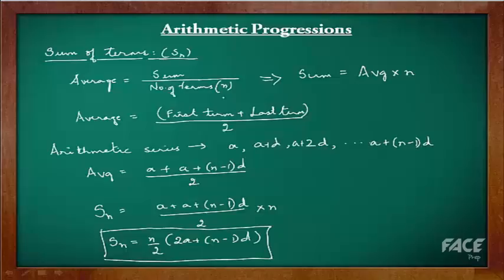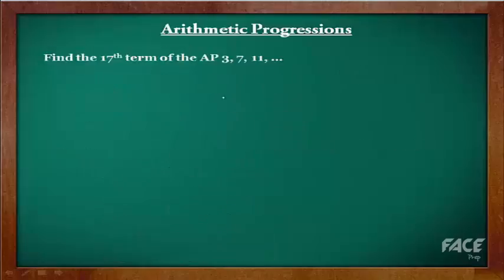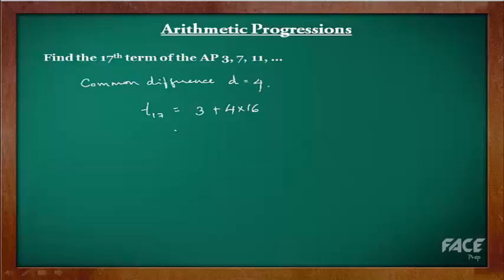These formulae may not be easy to use for difficult questions. A much better way of approaching arithmetic progressions is by using thought algorithms to solve questions in a logical manner. For example: find the 17th term of the AP 3, 7, 11, and so on. To find the 17th term, we add the common difference to the first term 16 times. The common difference is 7 minus 3, which is 4. So the answer is 3 plus 16 times 4, which is 3 plus 64, equals 67.